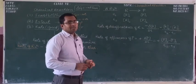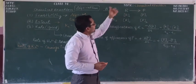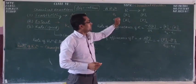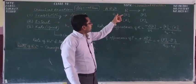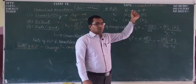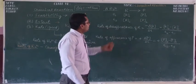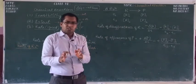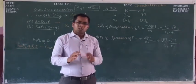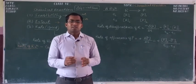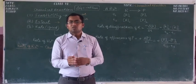Let us consider a hypothetical reaction where a reactant is converting into a product. At time t1, the concentration of reactant is r1 and the concentration of product is p1. Similarly, at time t2, the concentration of reactant is r2 and the concentration of product is p2. Rate of reaction can be expressed in two ways — in terms of disappearance of reactant or appearance of product. With time, the concentration of reactants decreases and the concentration of products increases.